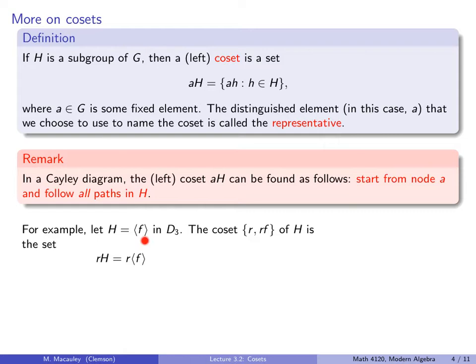Consider the subgroup generated by F in D3. The coset containing these two elements is the set RH — in other words, R times this subgroup. Written as a set, it is R times E and R times F, giving us RE and RF.